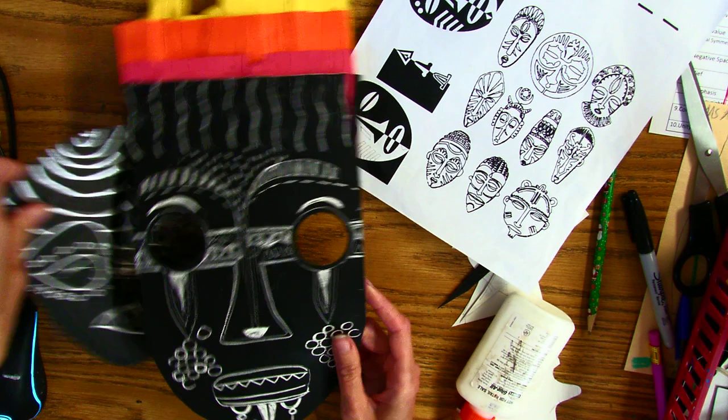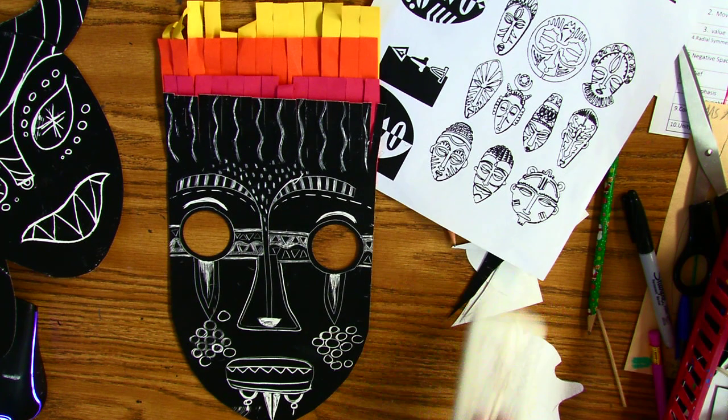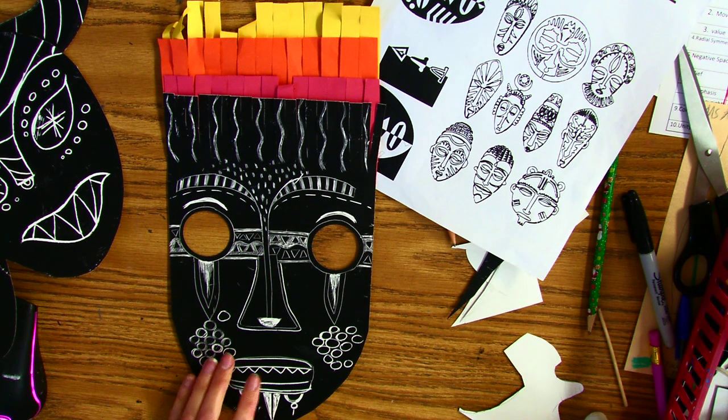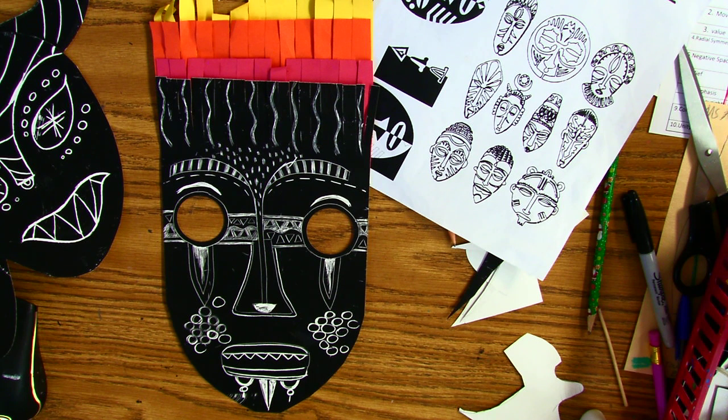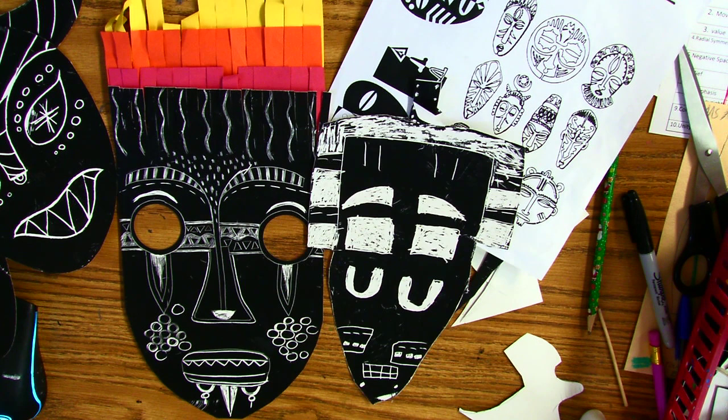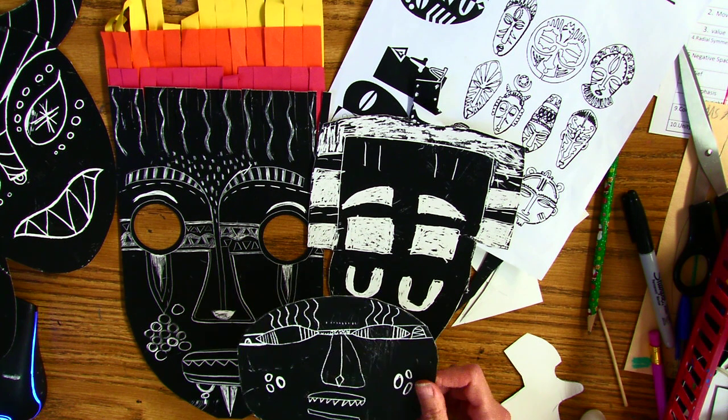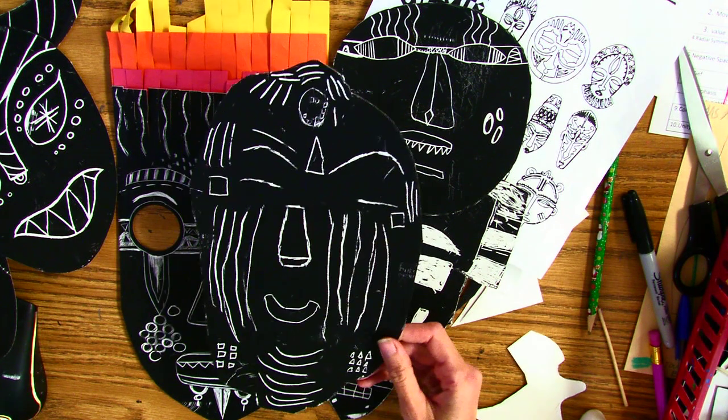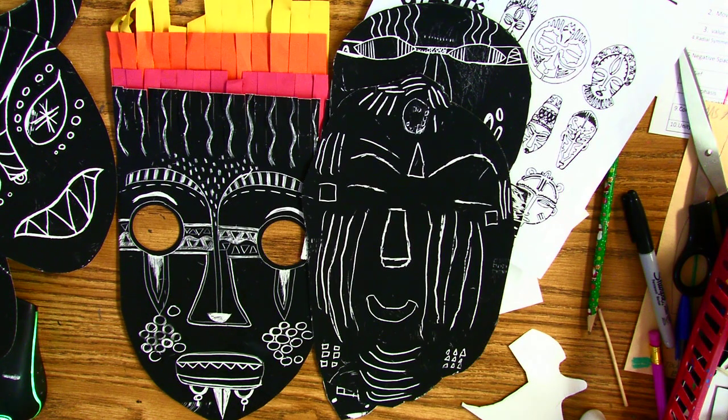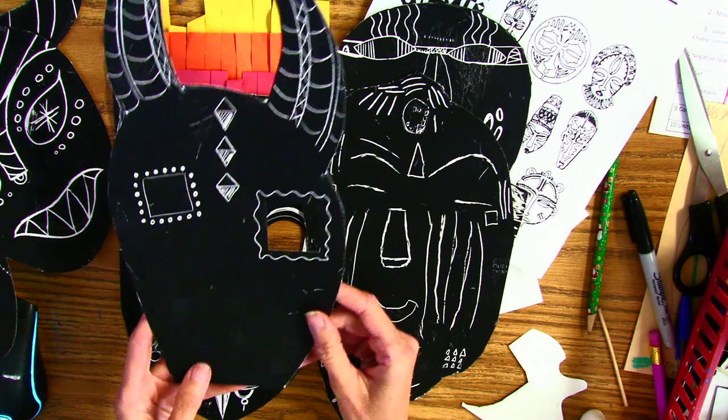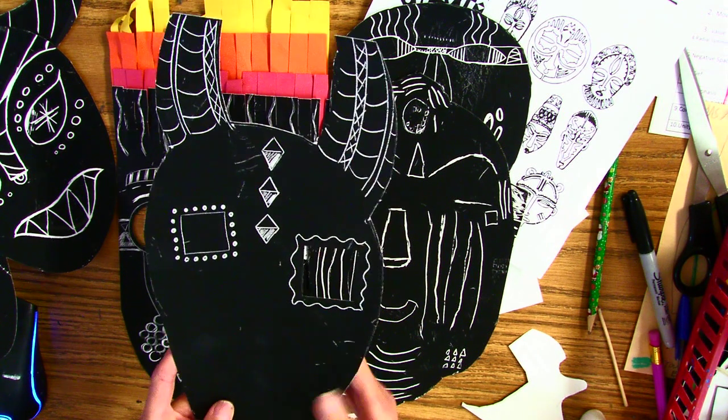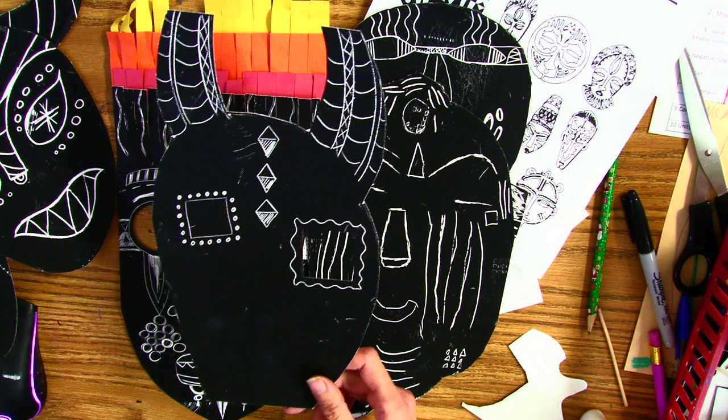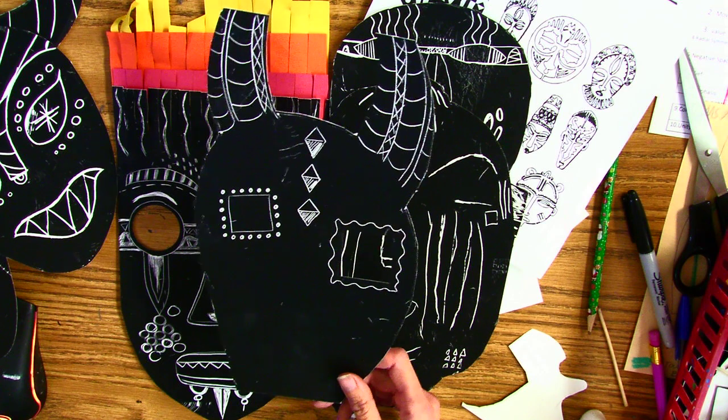I want you guys to look at the idea sheets, be influenced by African masks. You could do symmetrical, you could do asymmetrical. This one's not done, but I chose to have one eye punched and one not. That's asymmetrical, there's a letter A in front of it.